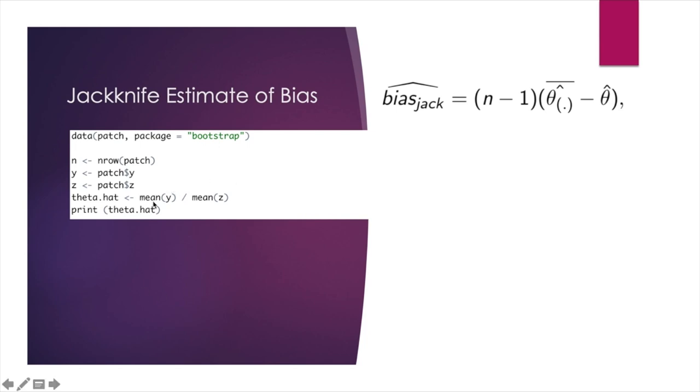For this part of the code, we get theta hat. That is the estimate computed from the original observed sample corresponding to this part of the formula. So if we print out theta hat, we would get negative 0.0713.